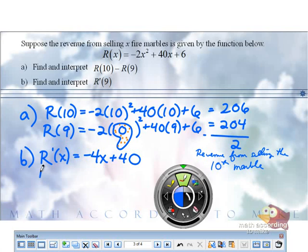What is R prime of x? So R prime of 9 is negative, not negative, positive what? 4.